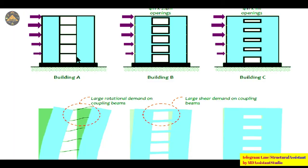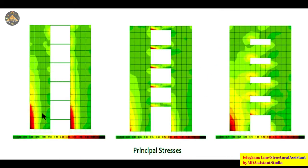When a structural wall is tied using small-depth beams or spandrels, the force concentration is high — visible as red areas in FEM analysis. However, when the wall system is properly configured, force distribution becomes much more uniform.